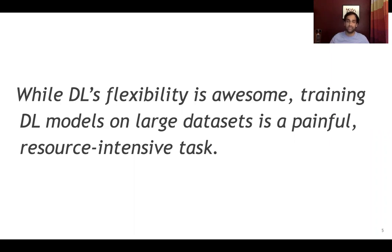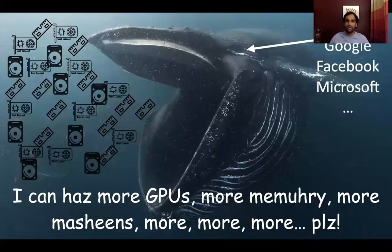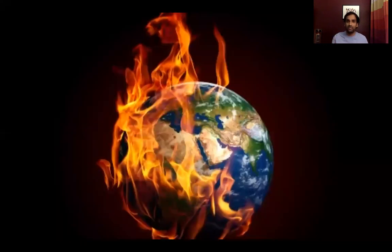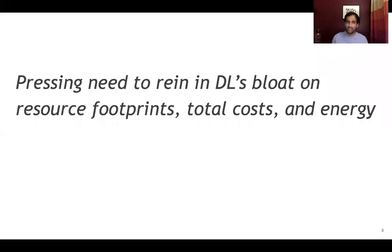However, training such deep learning models, because of their flexibility, is a very painful and resource-intensive task on large datasets. If you look around in the ML world and in the tech industry, this is what they're up to: throw more machines, more GPUs, more memory — if they want to apply deep learning to anything, and that is kind of the formula they've been offering. If everybody started doing what these cloud whales and web giants are doing, we'll be burning the whole planet in holy GPU fire. We don't want to do that. There is a pressing need to rein in this bloat on resource footprints, total costs, and energy that deep learning has brought about.